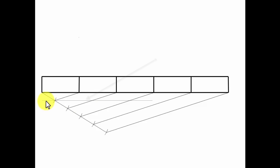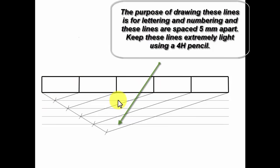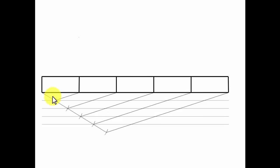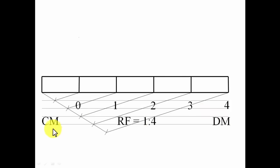I'll draw four lines inside the scale. Notice that lighter lines should be drawn with a 4H pencil, while the darker lines use an H pencil. At the end of the first division I'll write zero, then one, two, three, and four — each division equals one decimeter. To the right of zero is the main unit (decimeter) and to the left of zero is the subunit (centimeter). I'll also write the representative fraction RF = 1:4 somewhere in between.